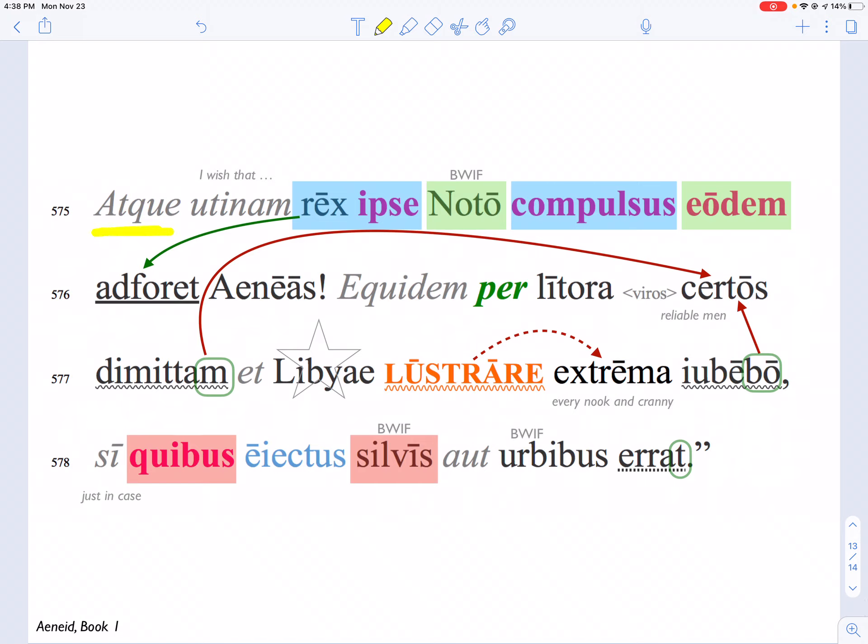And would that, or I wish that, the king himself, having been forced by the same south wind, King Aeneas, were here.